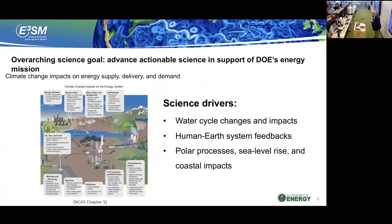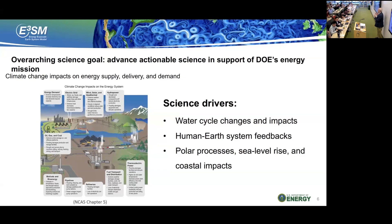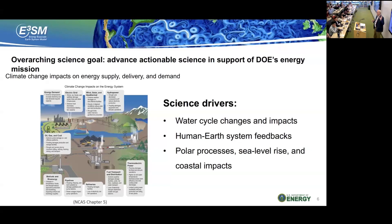Our development priorities are driven by science drivers — these are not everything the model is used for, but they provide a focus for development of the coupled system in three areas. If we develop a model focused on these three science drivers, it will be useful for many things, but this provides focus and sets priorities for how we develop the model instead of having someone put a feature in, write one paper, and disappear, leaving the project with something to support. We set our priorities by whether they serve the science drivers as defined in simulation campaigns.